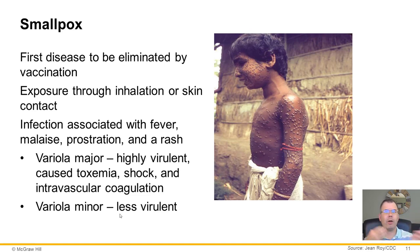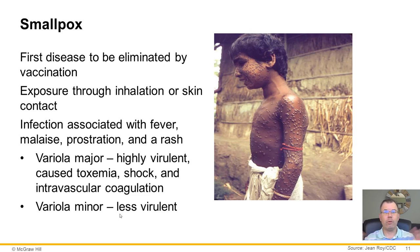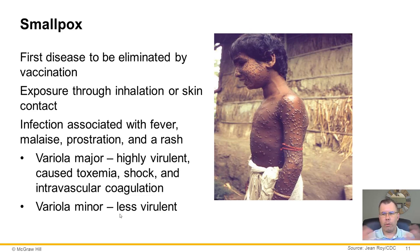Since smallpox has been eliminated, most of us younger than the mid-1970s have not been vaccinated, putting us at risk from potential use as a biological weapon. Since we haven't been vaccinated since 1972 in the United States, there are whole generations unexposed to smallpox or vaccinated for it. If someone decided to release the smallpox virus, the lack of vaccination would put many people susceptible to infection.